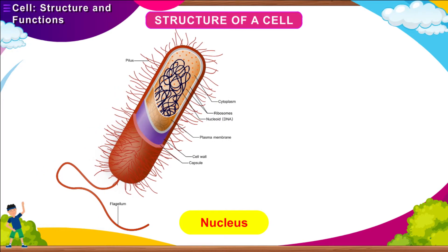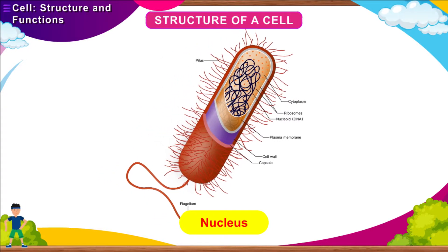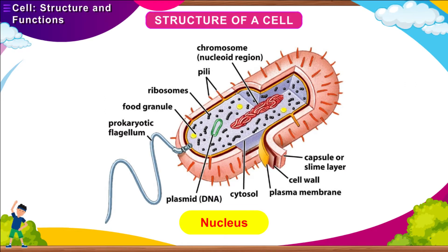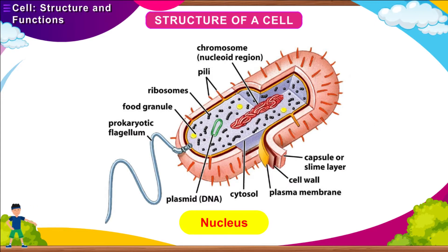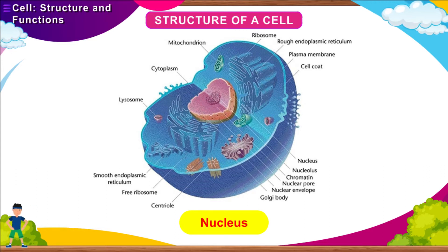The nucleus of the bacterial cell is not well organized like that of the cells of multicellular organisms. There is no nuclear membrane present in unicellular prokaryotes. The cells having nuclear material without a nuclear membrane are termed prokaryotic (pro = primitive, karyon = nucleus). Examples include bacteria and blue-green algae. The cells having a well-organized nucleus with a nuclear membrane are termed eukaryotic. All organisms other than bacteria and blue-green algae are eukaryotic.